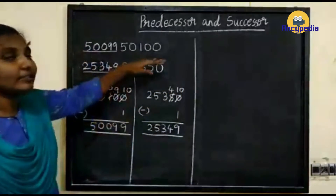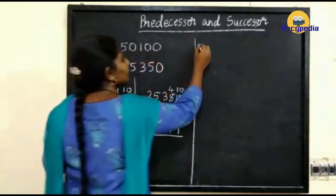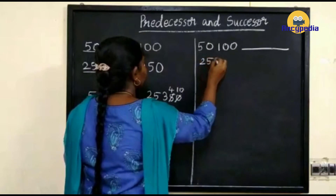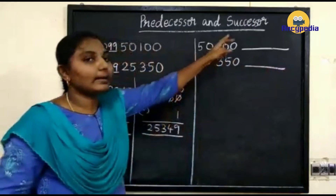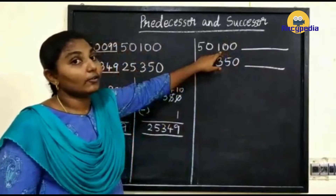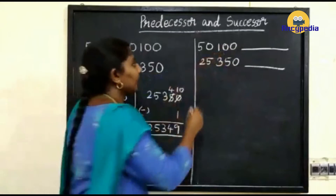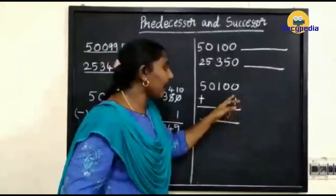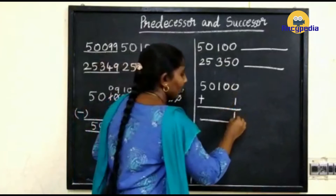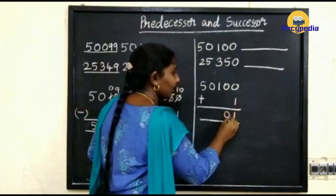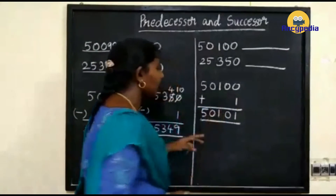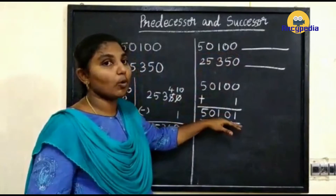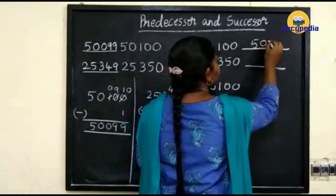Next we are going to find out the successor of these two numbers. To find out the successor of 50,100, you have to add 1 to this number. When we add 0 and 1, the answer is 1. Then here we have 0, so write 0; then 1, 0, and 5. So what is the successor of 50,100? The answer is 50,101, so write 50,101.